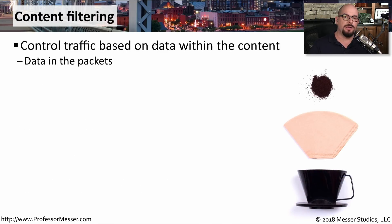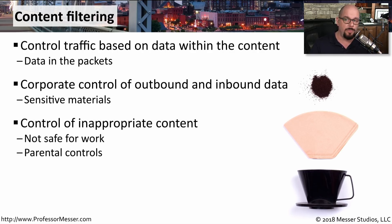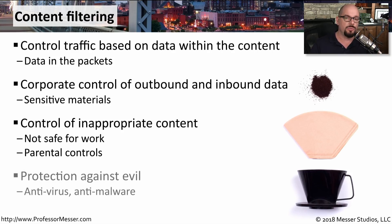These days, a lot of malicious software and data leakage occurs within the data of our applications. To control that, we may want to implement some type of content filtering on our network. This allows us to look into the data going back and forth and determine if somebody may be transferring sensitive information into or out of our network. It can also look for inappropriate content, provide parental controls, and look for malware — so usually anti-malware and anti-virus is built into the content filtering system we might have on our network.